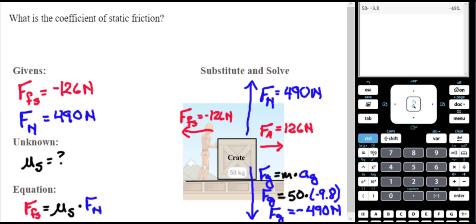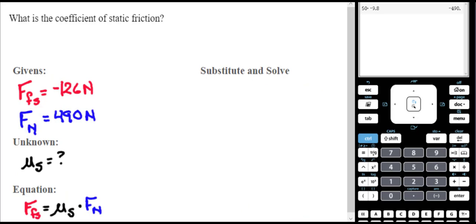I'm going to remove the free body diagram so that I can apply my force of friction static is negative 126 newtons. And that equals mu static times my force normal, in this case 490 newtons.